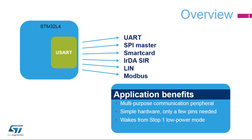The USART supports asynchronous UART communication, SPI or Serial Peripheral Interface Master Mode, LIN or Local Interconnect Network Mode. It can also interface with ISO IEC 7816 smart cards and IrDA devices. It also provides certain features that are useful when implementing Modbus communications.